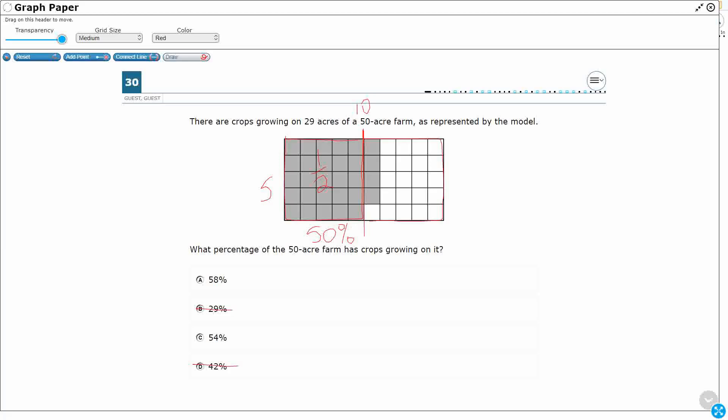So really, what this is, is this is a fraction. Right, like 29 of 50. Right, so I've got 29 and there's 50 total. And the crops are growing on the shaded part. Sometimes they'll give you a tricky problem. They want to know how much is not shaded. Right, so we just need to find the percentage of the shaded part.